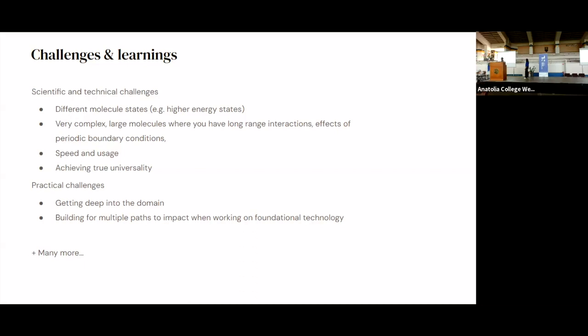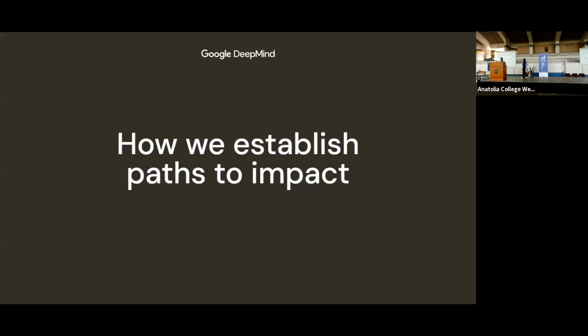Practically, getting deep into the domain was very hard. It took us a number of years and working very closely with domain experts to be able to make notable progress. And I think it's not necessarily the only way to make progress using AI in a specific domain, but it definitely gave us some unique advantages by going so deep. And then another practical challenge was building multiple paths to impact when you're working on something that's so foundational can be a real challenge. And actually, I'm going to hand over to Taryn, who's going to talk a little bit more about how we establish those paths to impact.